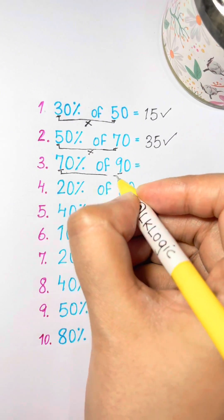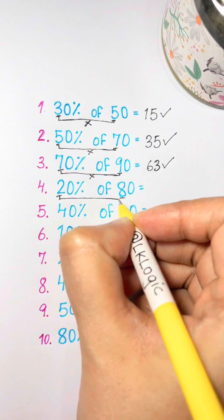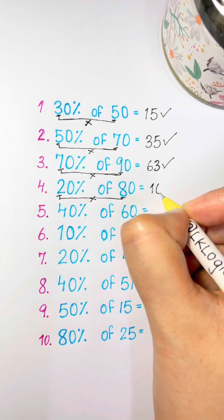What's 70% of 90? Multiply 7 times 9 equals 63. What's 20% of 80? Just multiply 2 times 8 equals 16.